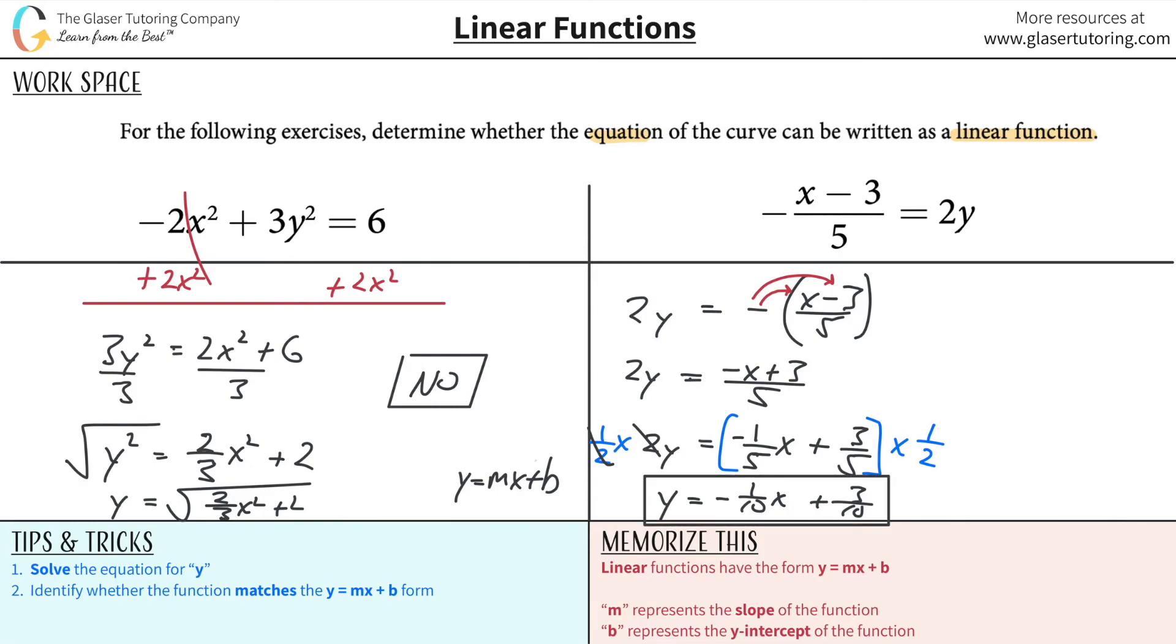Does this equation look like it follows the form y is equal to mx plus b? It does, right? It does. I have y by itself, so that's a check. The next thing I have is my slope, negative 1 tenth, which is fine.